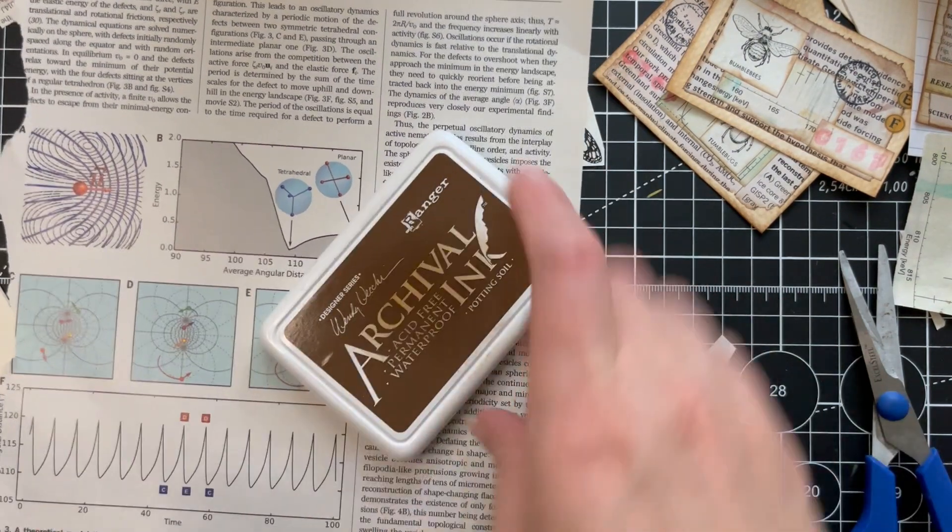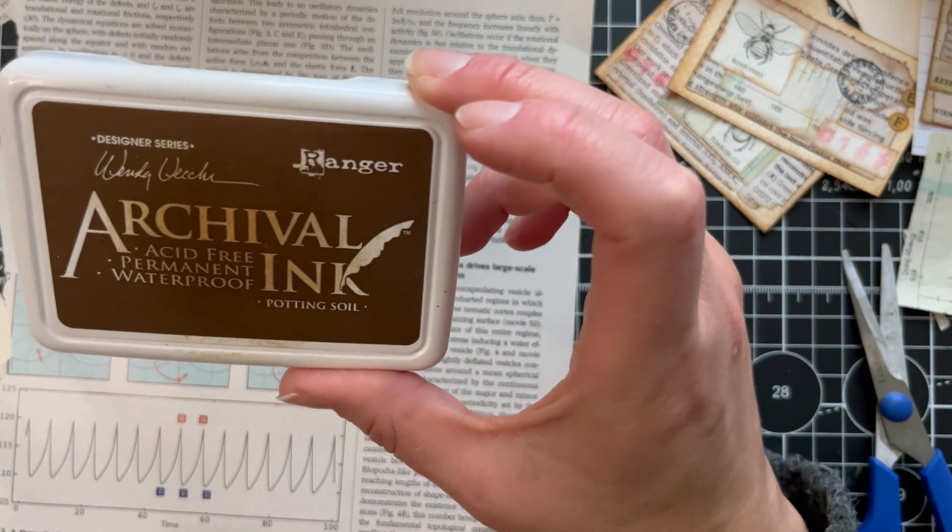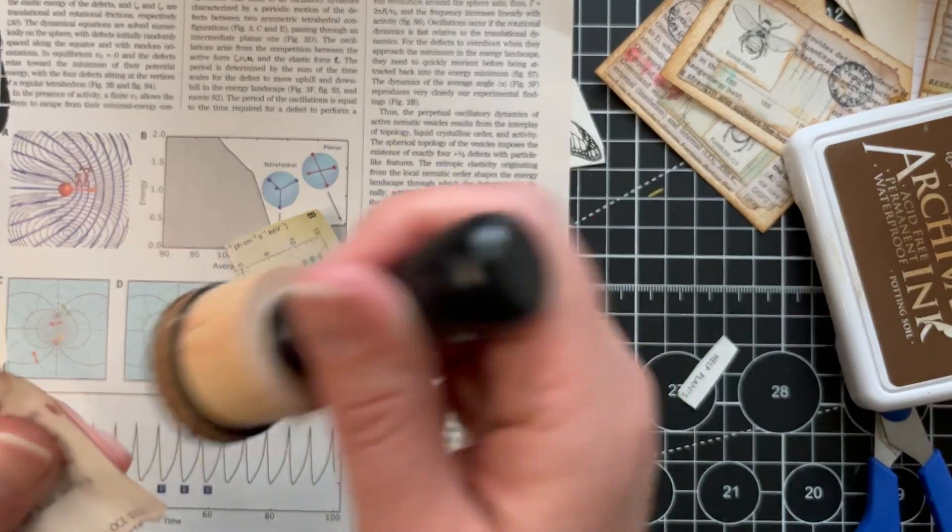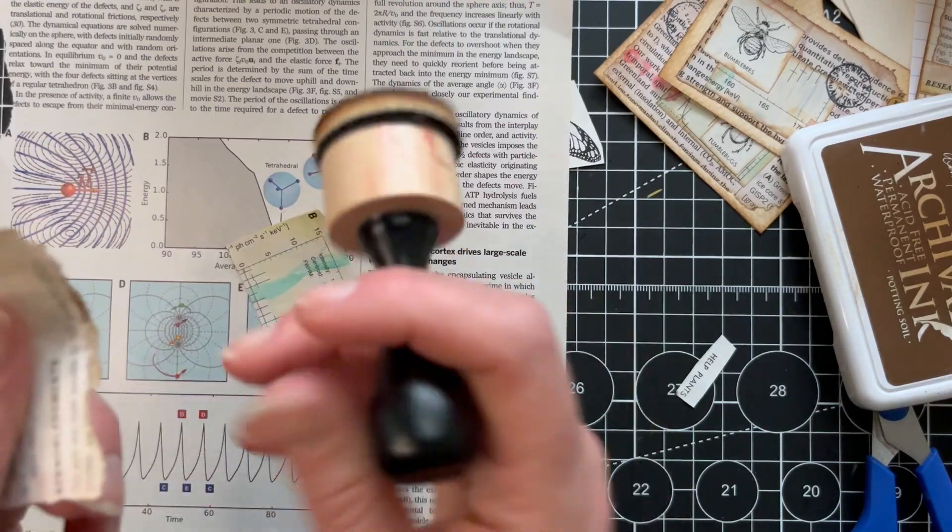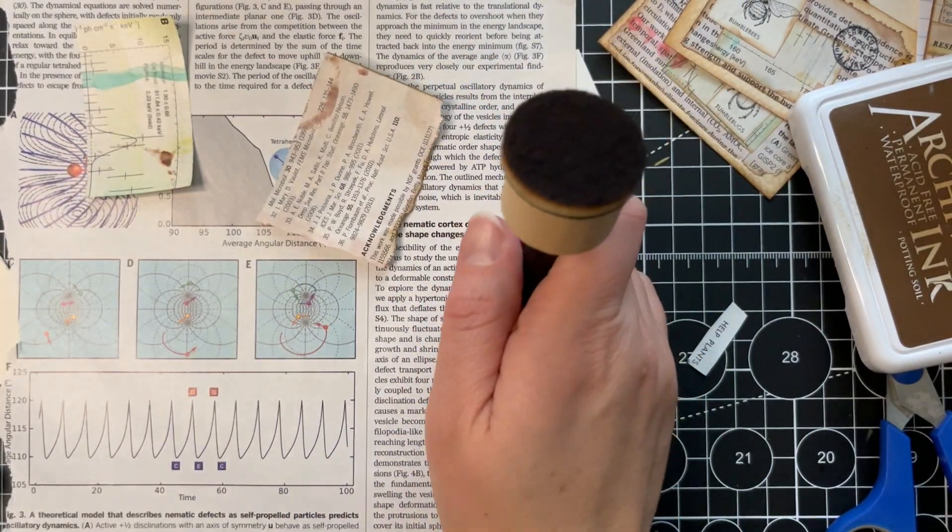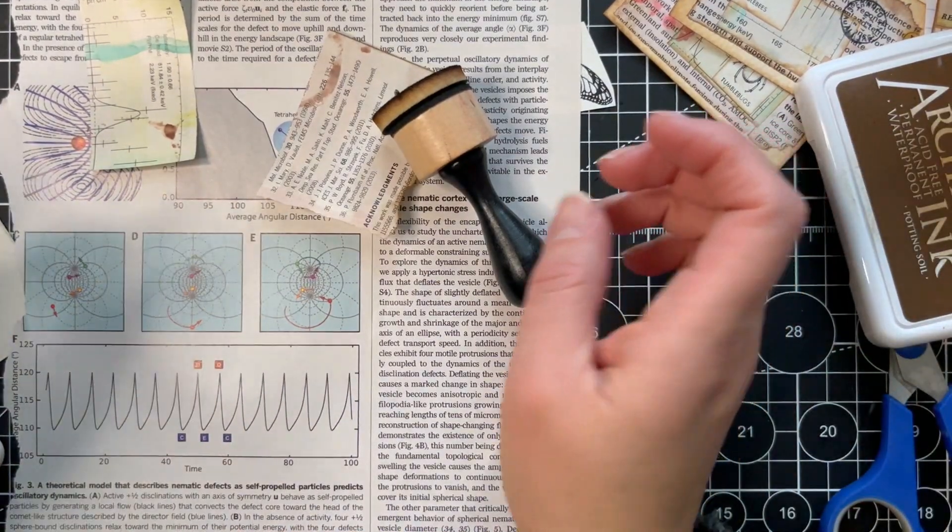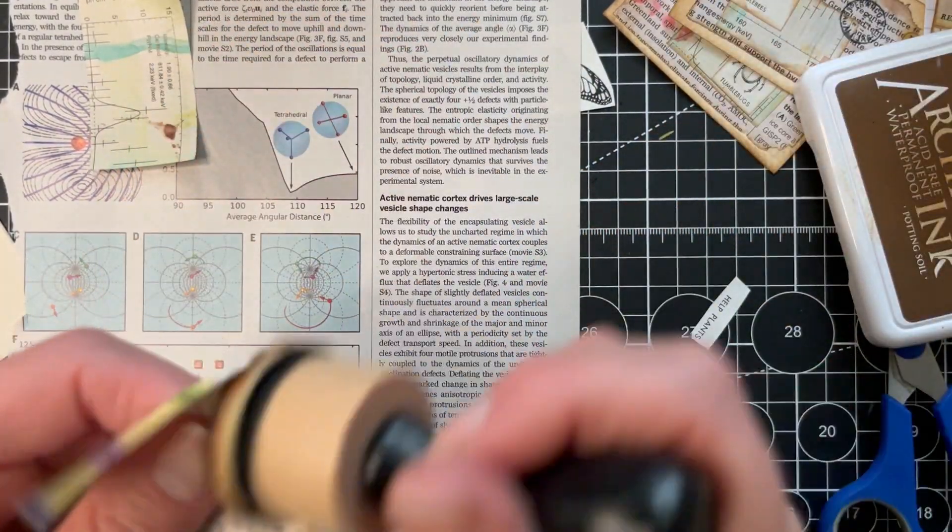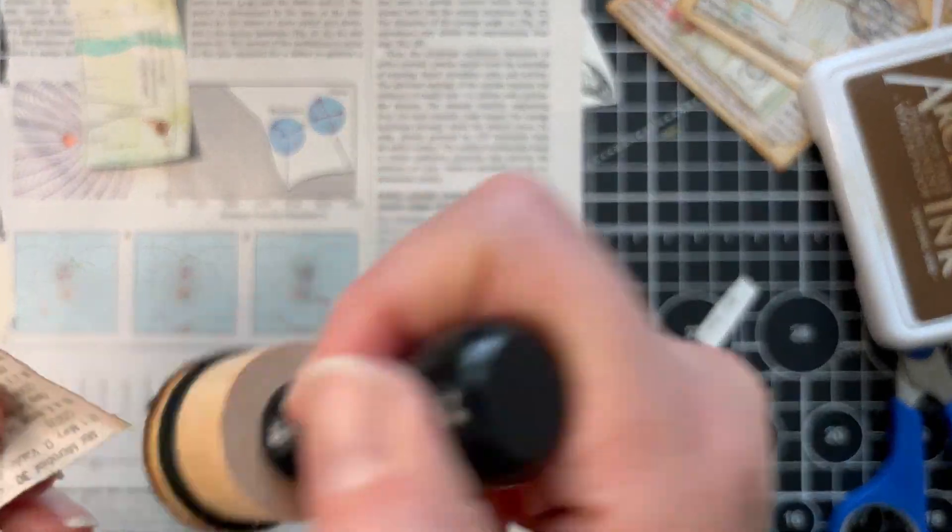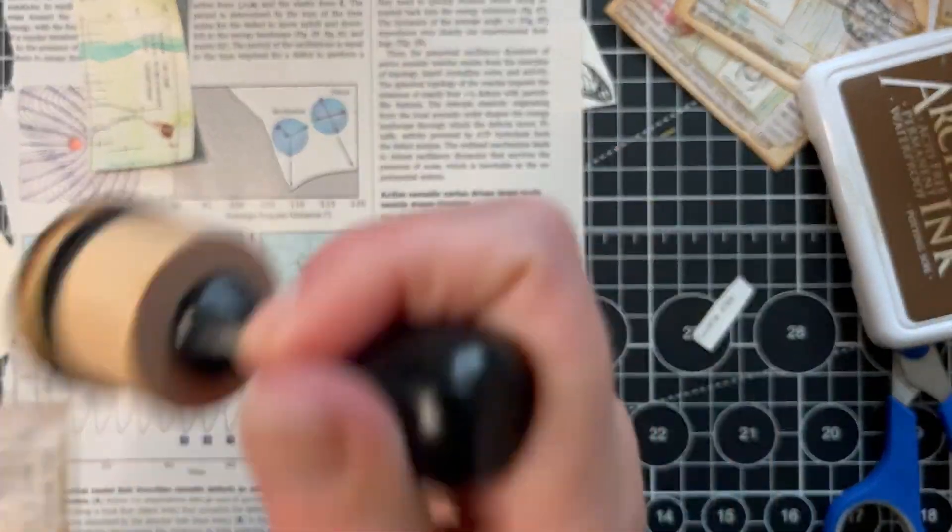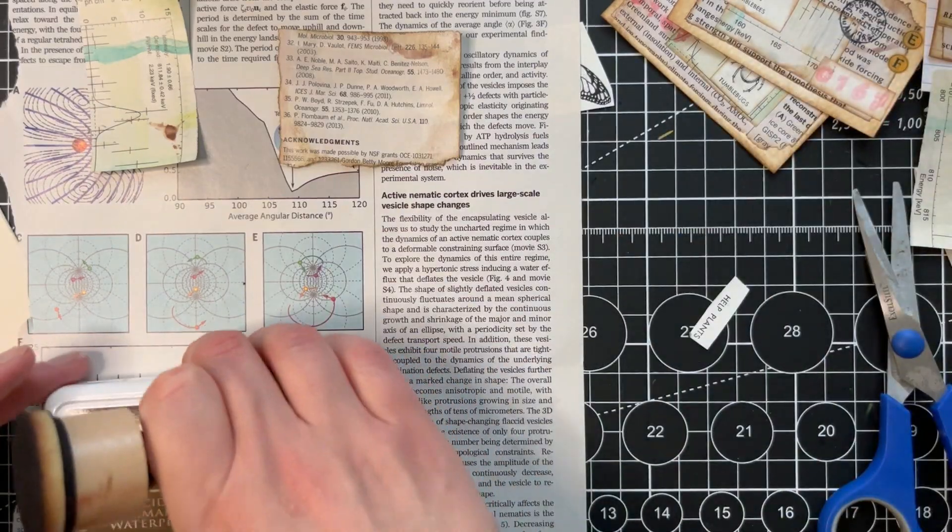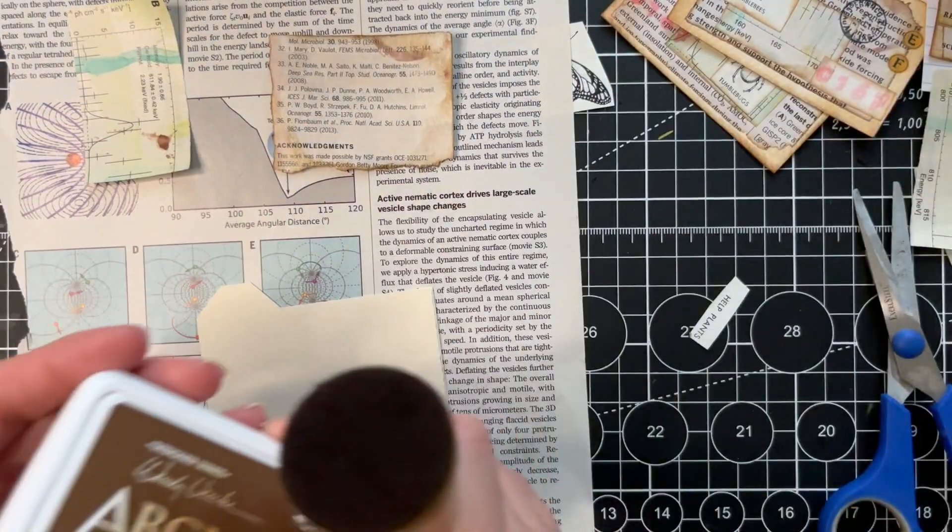So let's start inking and gluing. I've been using archival ink by Ranger in the potting soil for this. It's a nice dark brown. It's so dark in here. Okay, how is that? I increased the intensity of my light because I cannot see anything. And I don't want to turn my ceiling lights because I don't like how that looks on video. Why is it so dark?